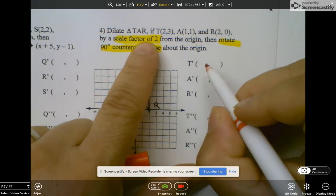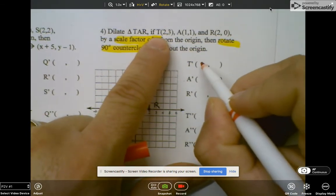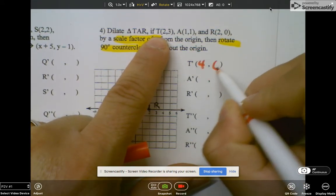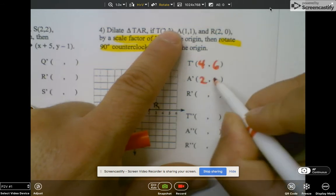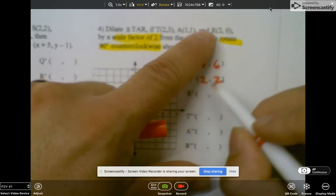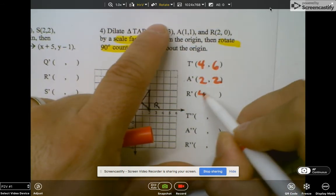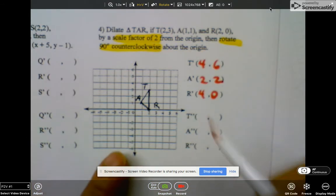Then multiply everything by two, so it's going to become (4,6), (2,2), and then (4,0). Then I go ahead and graph it and I label the prime.